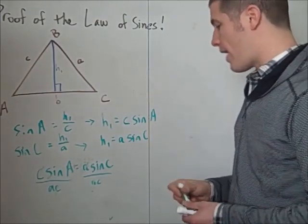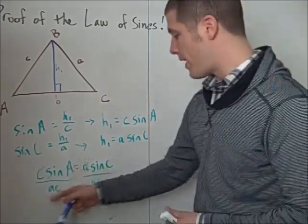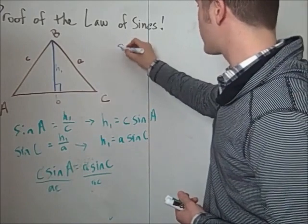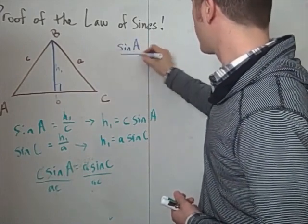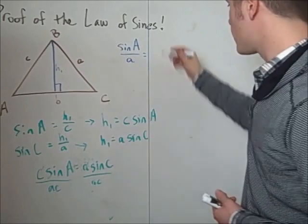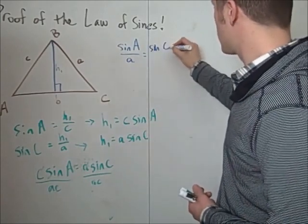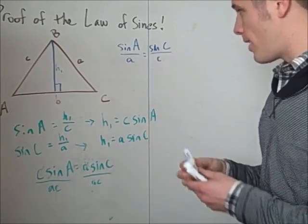So we're halfway there. We now have the sine of A over a is equal to the sine of C over c. We're not quite done.